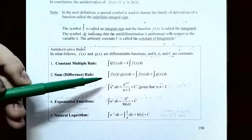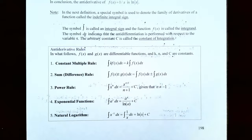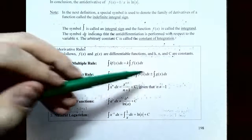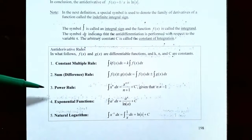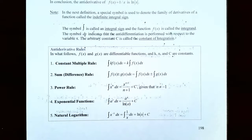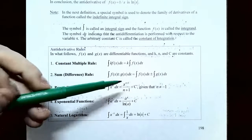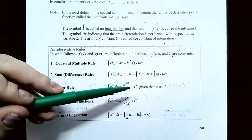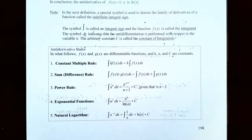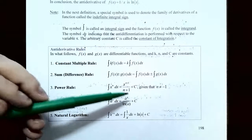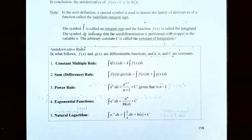Rule two is the sum and difference rule: if you have the indefinite integral of a sum or difference of two or more functions, you can find the antiderivative of each function separately and add or subtract those answers, keeping the sign between the functions. Rule three is the power rule for antidifferentiation: the integral of x^n dx equals x^(n+1)/(n+1) + C. You add one to the exponent and divide by the new exponent. This formula only applies when n is not negative one, because if n = −1 the denominator is zero and the expression is undefined.